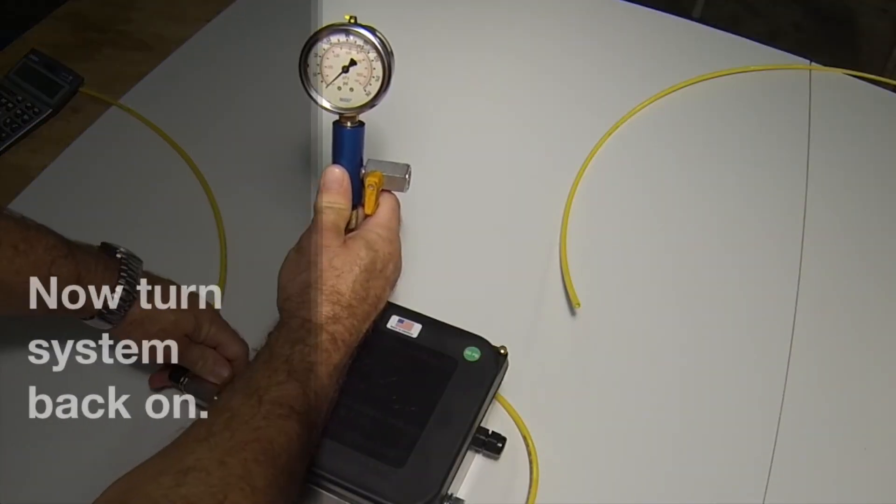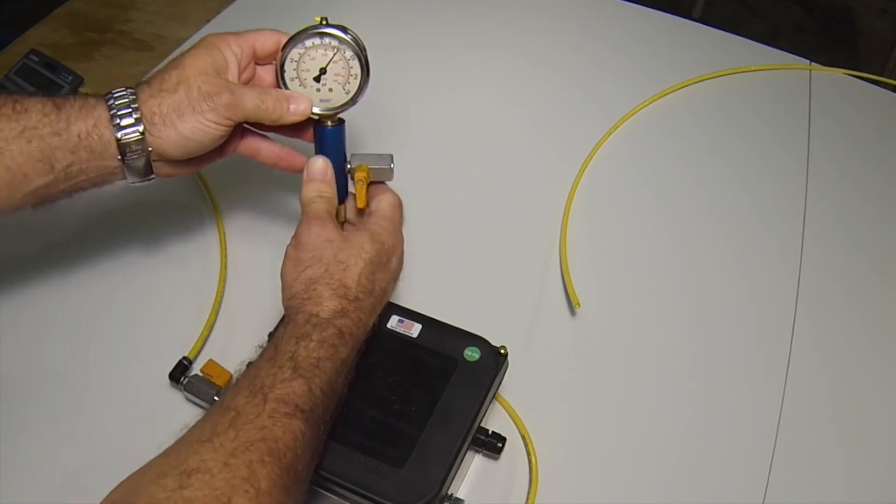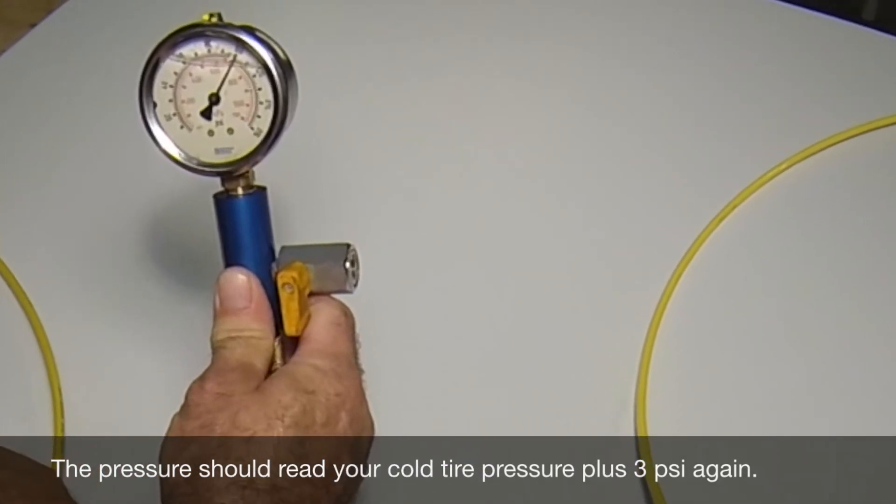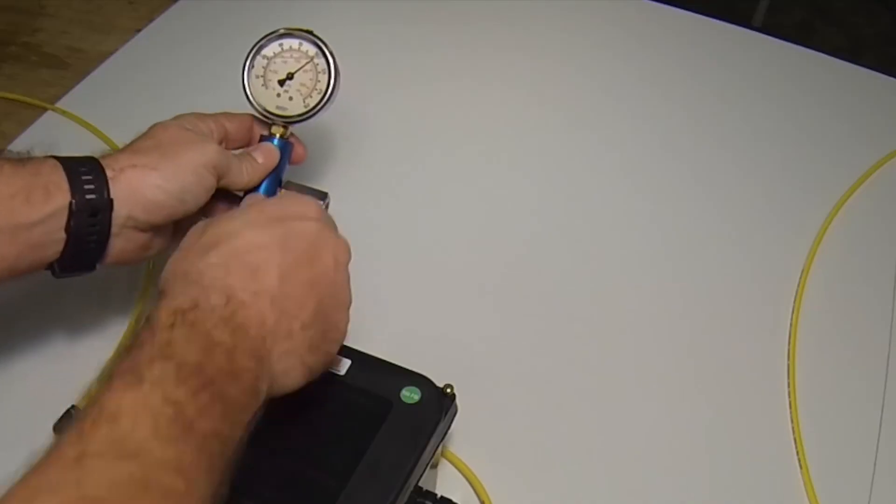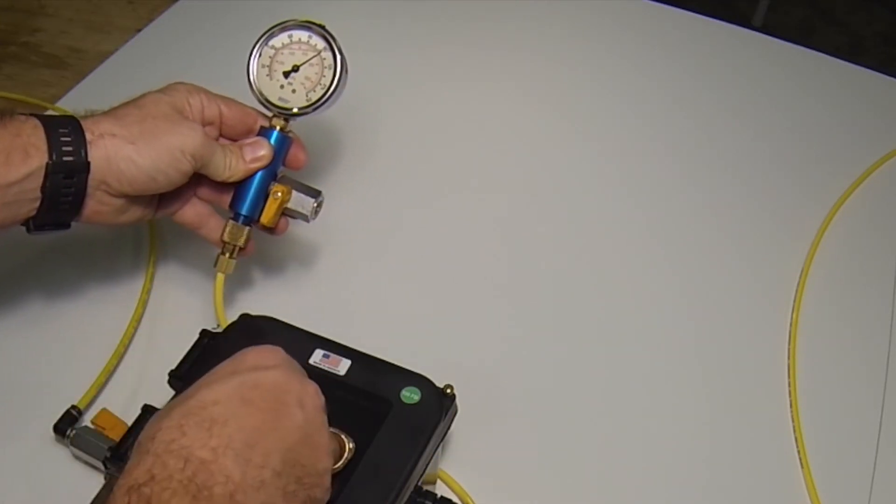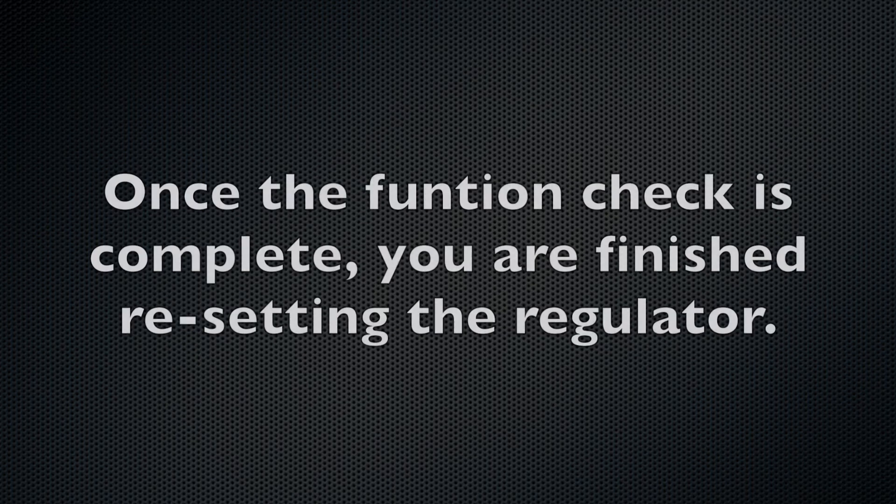Now open the on-off valve on the supply side of the control box and charge the system. The test gauge should now read 3 psi over your desired tire cold pressure setting again. After verifying that the pressure on the gauge does read 3 psi above your cold tire pressure spec, cycle the valve on the gauge at least two times. And if the pressure on the gauge is still showing 3 psi above your cold tire pressure spec, the function check is complete and you're finished resetting the regulator.